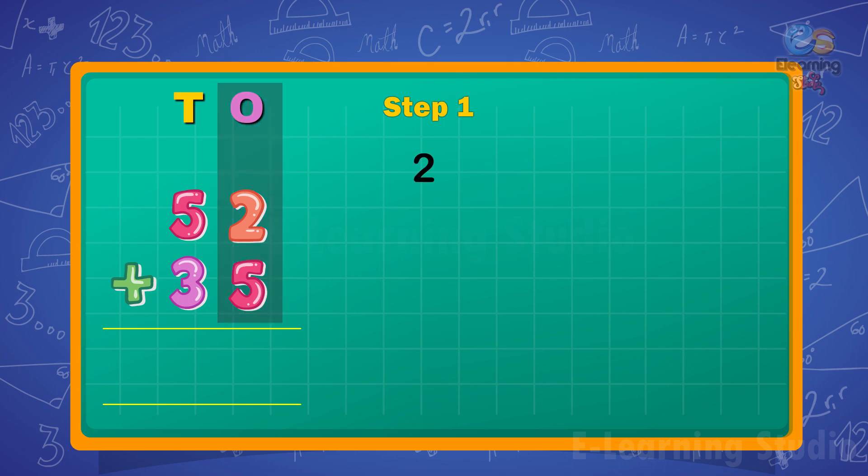add the ones. 2 plus 5 equals 7. Write 7 under the ones column. Step 2: Next,